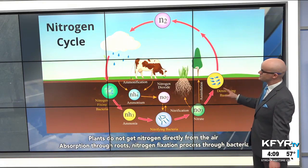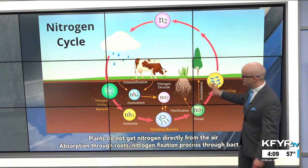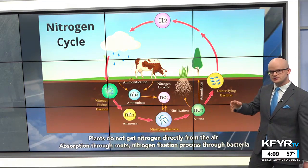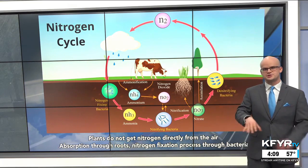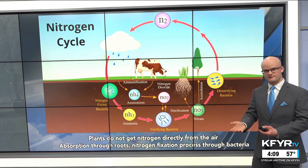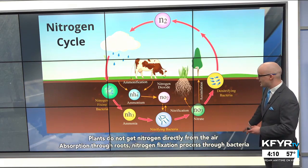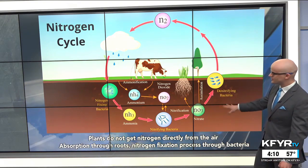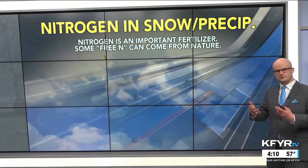With nitrogen specifically, there's a whole cycle throughout our atmosphere and the ground. Plants and crops don't get nitrogen directly from the air — they have to absorb it through their root structure. That's why farmers apply fertilizer, which is rich in nitrogen, and it happens through a nitrogen fixation process with bacteria usually in the soils.